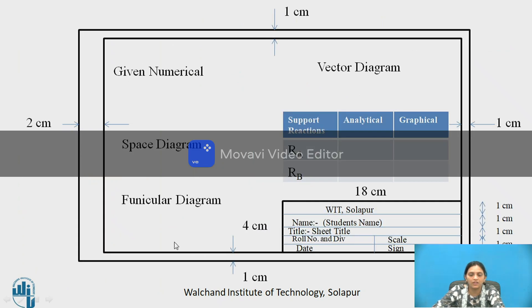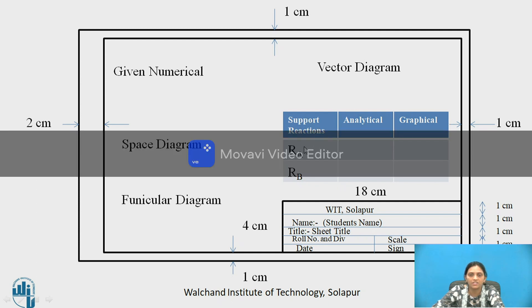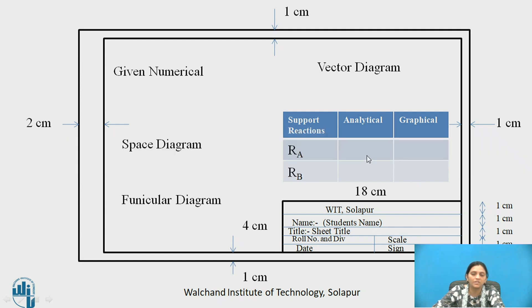This is the layout of the drawing sheet. Draw the given numerical at the top, the space diagram below it, and the funicular diagram below the space diagram. At the top right corner draw the vector diagram, and below it show the results in tabular form. Write the support reactions RA and RB with their analytical answers in one column and the graphical answers in another column. Compare the analytical and graphical answers — they must be the same.